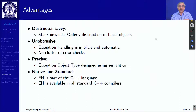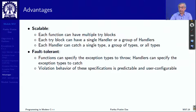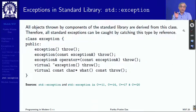Exceptions have many advantages: they are destructor-savvy, unobtrusive, precise, and native to the language. The shortcomings we noted for C become strengths in C++. Besides that, it is scalable — each function can have multiple try blocks, each try block can have multiple handlers, each handler can handle single or groups of types. It is fault tolerant because it makes functions specify their error behavior. So exceptions are a solution for all kinds of error handling.